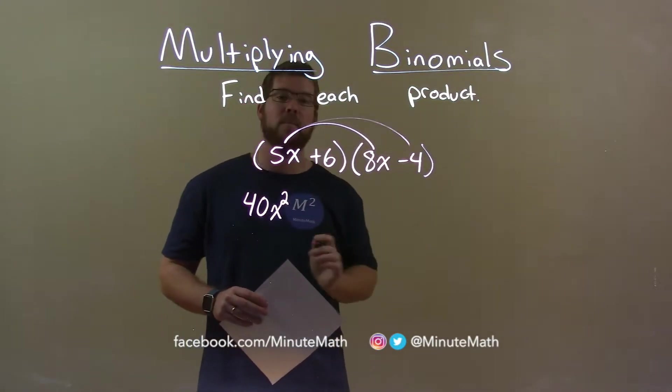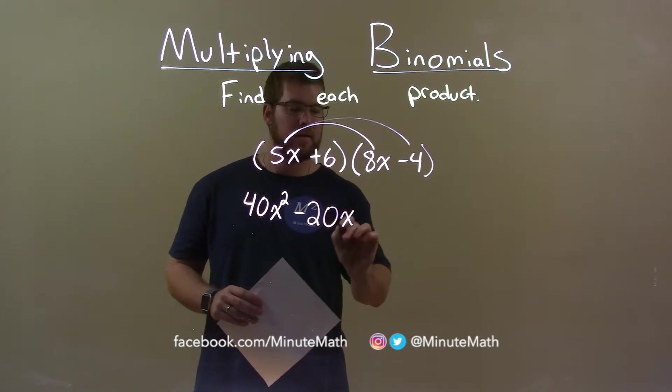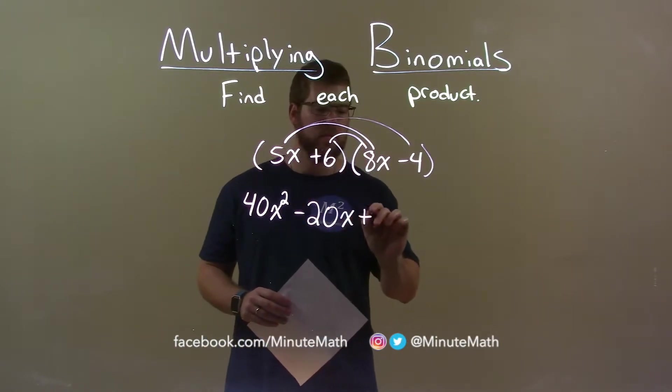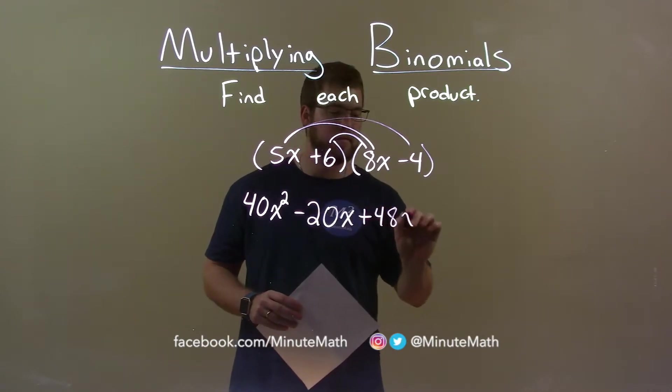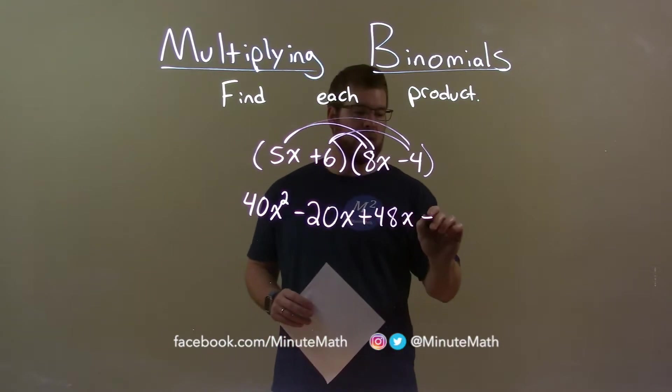5x now multiplied by minus 4 is minus 20x. 6 times 8x is 48x and 6 times minus 4 is minus 24.